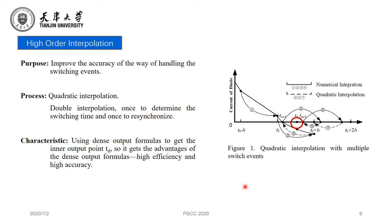The process of quadratic interpolation based on dense output formulas is proposed. What is special is that we use dense output formulas to get the inner output at Td. If we use the outer output at T0 minus H to do quadratic interpolation, there will be no accuracy improvement. So the inner output is necessary.